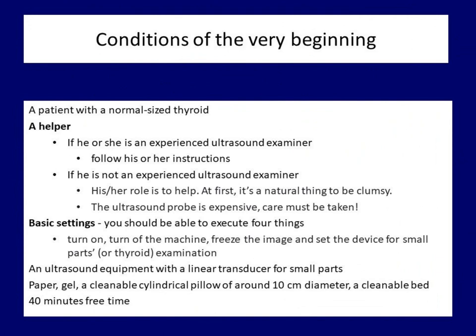The conditions of the first ultrasound examination are listed in this table. I highlight two of these. The first is that you need a helper — if she or he is an experienced examiner, you are in case one; if not, nothing is lost. One of the main roles of the helper is to help maintain the integrity of the probe, as a bad move can cause serious damage. The other point is to become familiar with the very basic settings: how to turn the machine on and off, how to freeze an image, and importantly, the default setting should be 'small part' or 'thyroid'. These should be learned before you call the first person to evaluate.